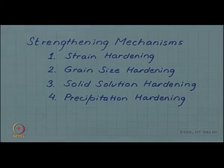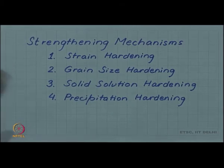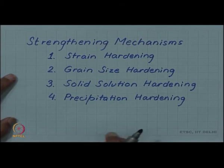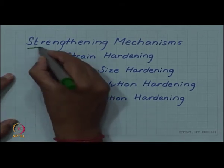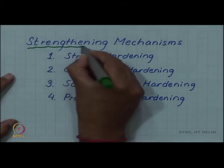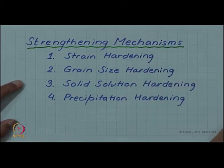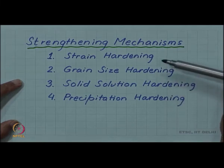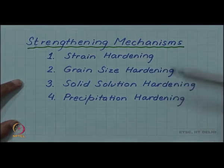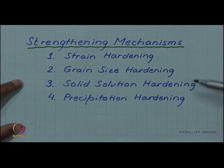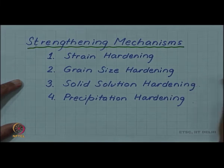Various ways have been used in engineering to achieve such strengthening, and they have been labeled as strengthening mechanisms. I have listed four important strengthening mechanisms here: strain hardening, grain size hardening, solid solution hardening, and precipitation hardening. As we go along, we will discuss each of these strengthening mechanisms.